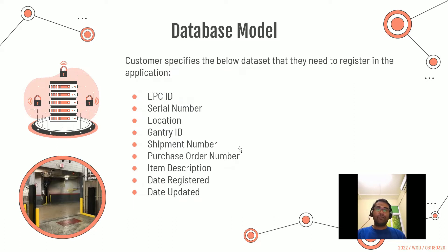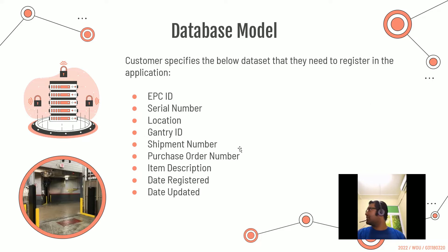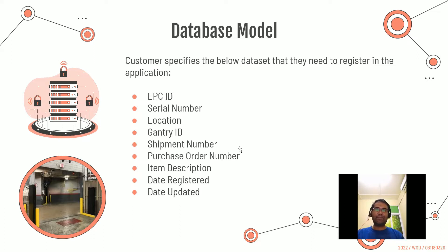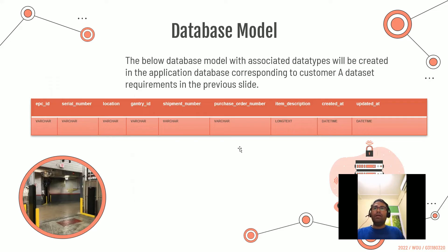Since the customer would like product registration details within the application, a database model is needed. It has EPC ID as the first column, followed by serial number, location, gantry ID, shipment number, purchase order number, item description, date of registration, and date updated. This shows the database table structure and its data types.